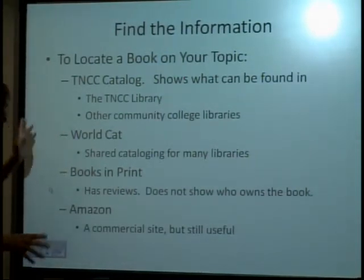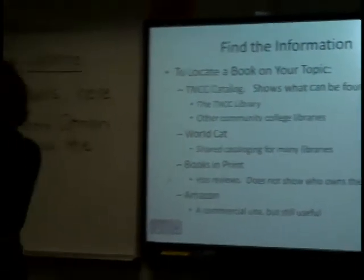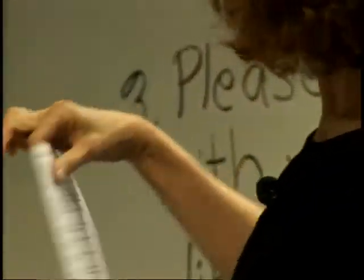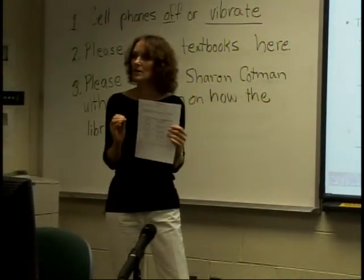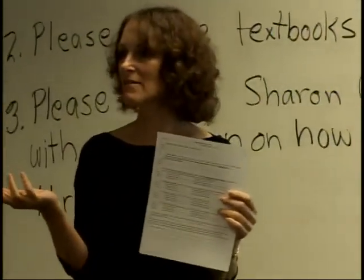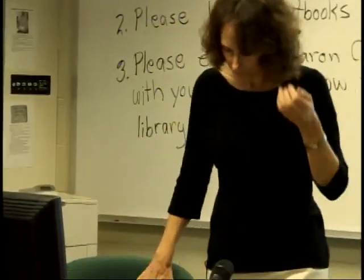There are actually four different sources we look at in class to find a book on the topic. We have the topic selection form and we use this to look at various online sources and try to find out if there are books on a particular topic, because they may have found a good topic but there's absolutely nothing available. So I'd like you to think of a topic you're interested in, make sure everyone's computer is on, and let's go to Internet Explorer and look at the TNCC catalog and WorldCat.